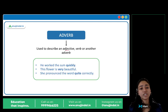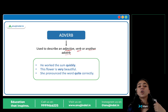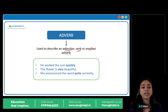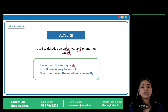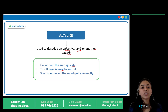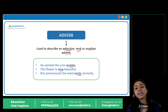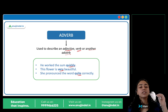It is used to describe an adjective, verb, or another adverb. Adverb kisi describe karta hai? Adjective — kisi quality ko describe karta hai. Verb — kisi action ko describe karta hai. Ya kisi aur adverb ko describe karta hai. 'He worked the sum quickly.' How? Quickly. 'This flower is very beautiful.' How much? Very beautiful. 'She pronounced the word quite correctly.' How correctly? Quite correctly. So quickly, very, quite — these are our adverbs.